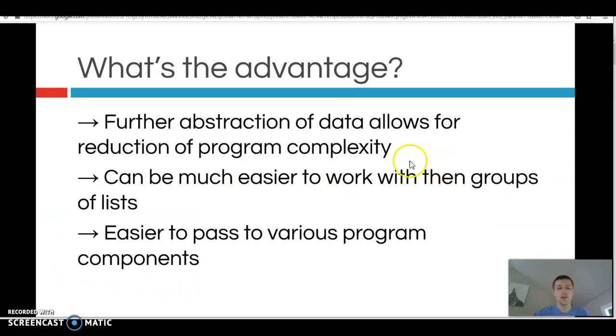What's the advantage? You're abstracting data to allow for a reduction of program complexity. So think about how you would store this stuff. If you didn't have access to objects, you would have to have multiple variables or multiple lists of variables, all coordinated together to keep track of lots of pieces of information for one thing. And if you have lots of those things, you would need them to put all of that into a list. That's really hard to keep track of, or even wrap your mind around.